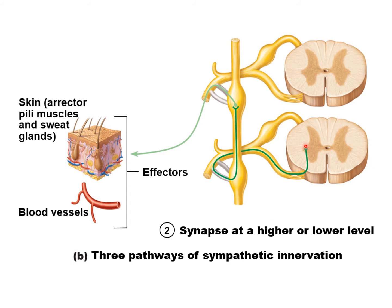Let's follow our second possibility. There's our lateral gray horn, here's our pre-ganglionic neuron leaving the spinal cord via the ventral root and spinal nerve. It takes the white ramus into the sympathetic chain, but does not synapse at the level it enters. In this case, it goes up a level, then synapses. There's our post-ganglionic neuron leaving the sympathetic chain through the gray ramus and then to the effector. It's still a two-neuron chain. Possibility two: enters the chain, goes to a different level, then synapses before the post-ganglionic neuron leaves.